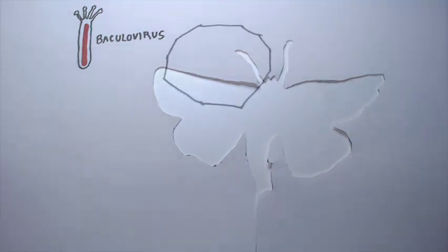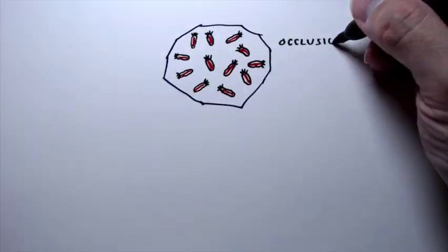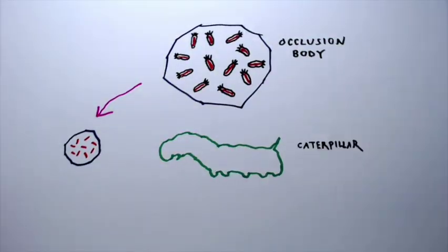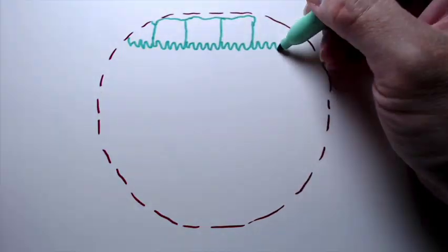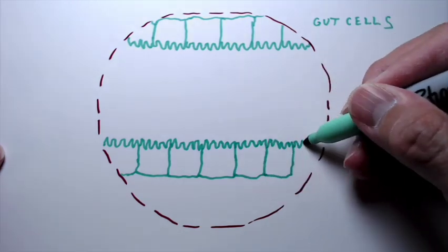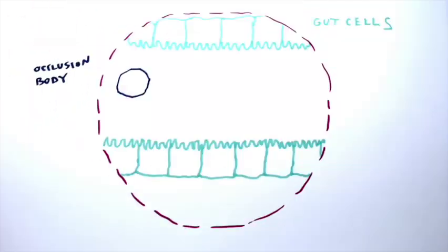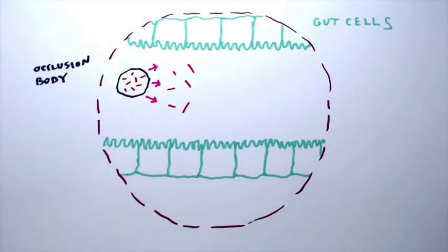These viruses are embedded within structures called occlusion bodies, which are eaten by caterpillars. The virus then infects cells in the gut, where it replicates and is released to infect cells in other tissues of the caterpillar.